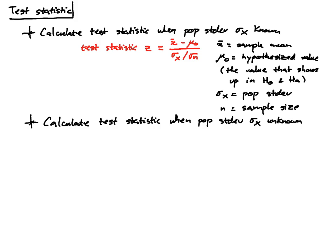In this case, the test statistic which is denoted by t is equal to x-bar minus the hypothesized value mu sub zero divided by sx over the square root of n.